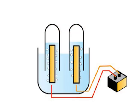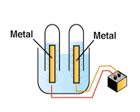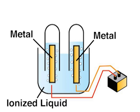Electrolysis is a special kind of reaction involving electricity and a liquid. It starts with two pieces of metal, or of another conductor, called electrodes. The electrodes are placed in a liquid. Dissolved in the liquid are ions, atoms or molecules that have gained or lost electrons.